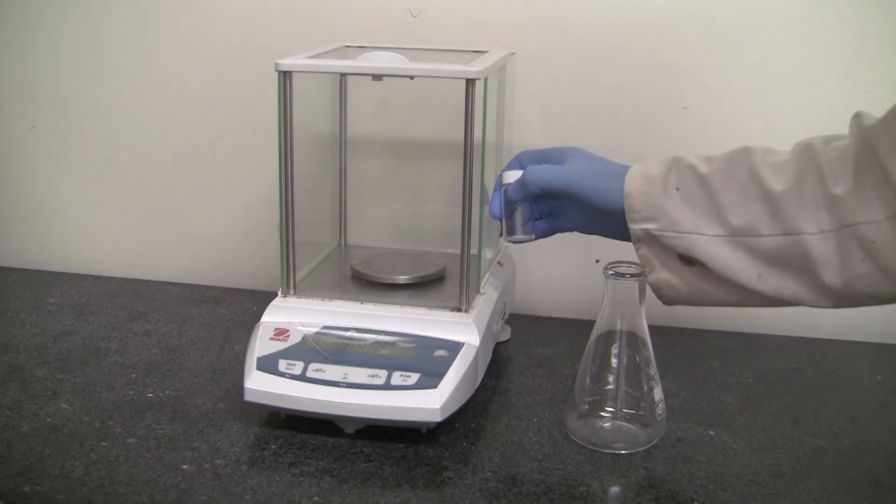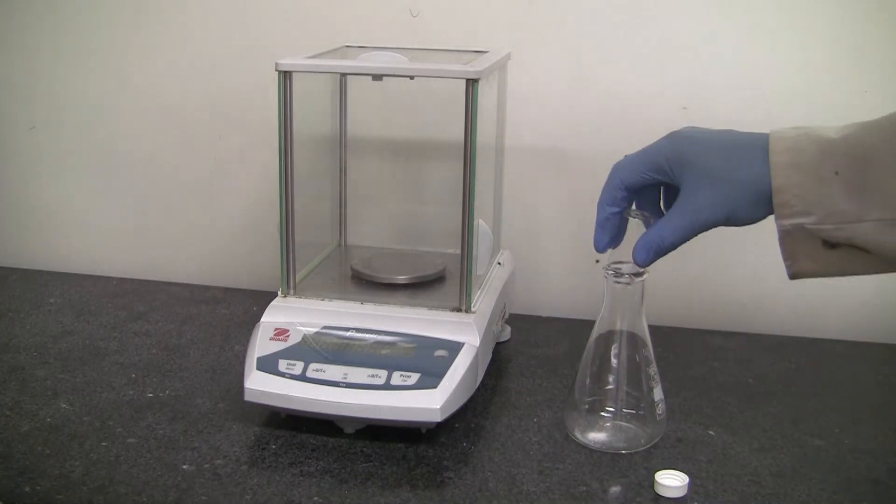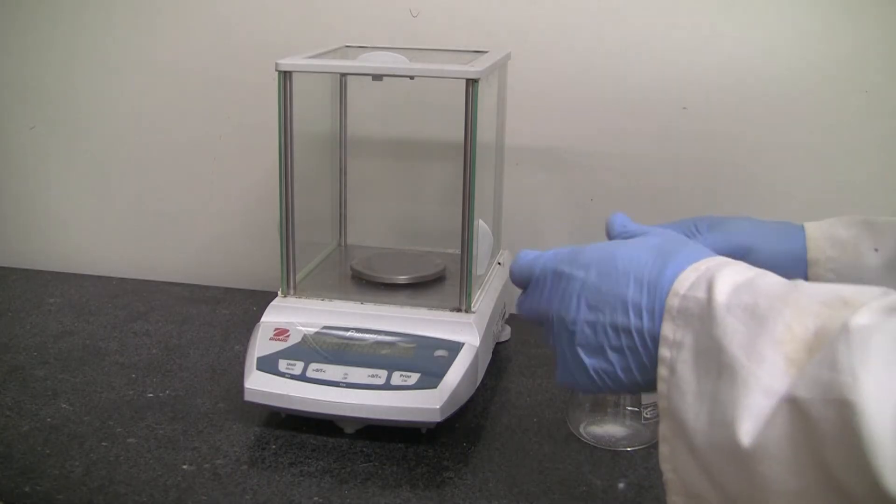Take your sample out and carefully transfer it into the flask you're going to be working with. Make sure you don't lose any on the transfer. Pop the lid back on—there'll still be a little residue left in your vial, that's fine.